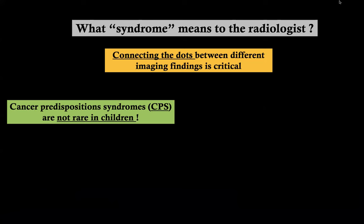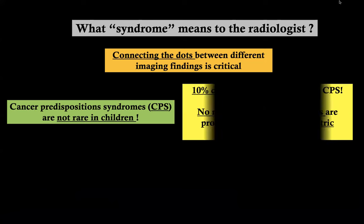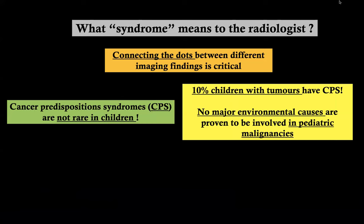Even more interestingly, even if you are not dealing with a cancer predisposition syndrome per se, you need to keep in mind that no male environmental causes are proven to be involved in pediatric malignancies. In other words, genetics and molecular pathways are always part of cancer predisposition syndromes in children. There is another lecture on pediatric brain tumors in my channel — a lot of different genetic and molecular pathways are involved in different tumors that explain the embryological origin of tumor cells and their location in the brain, which helps in the differential diagnosis.